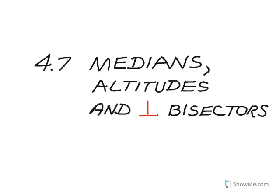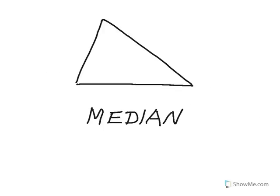This lesson is about medians, altitudes, and perpendicular bisectors. First, let's talk about medians. The median of a triangle is a segment that goes from the vertex of one of the angles of the triangle to the midpoint of the opposite side.